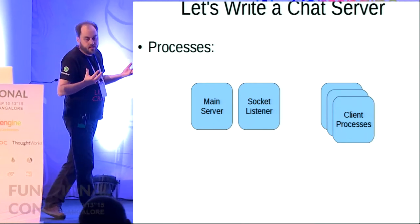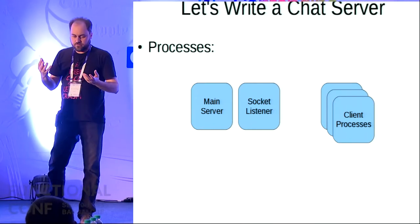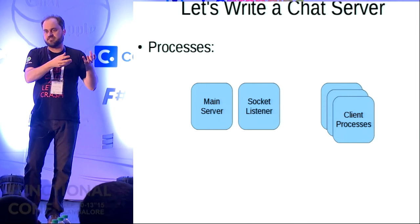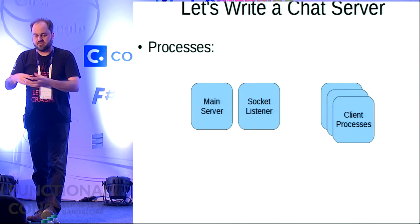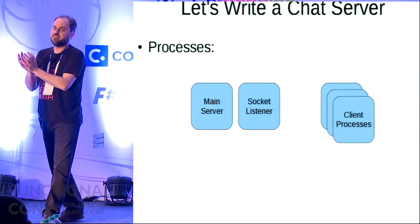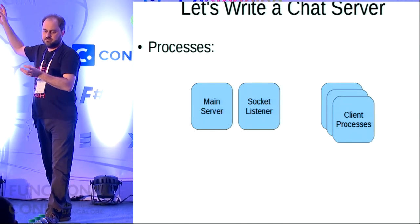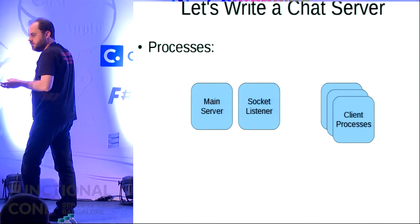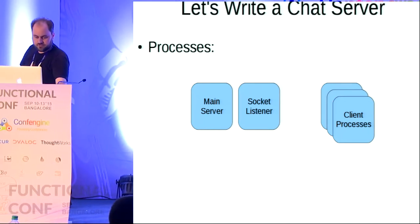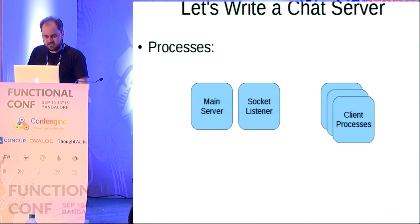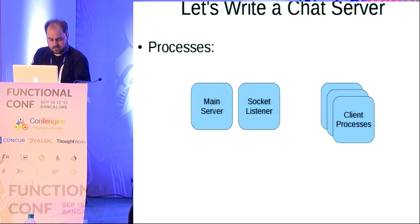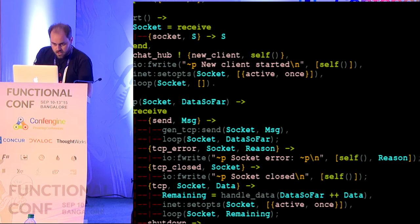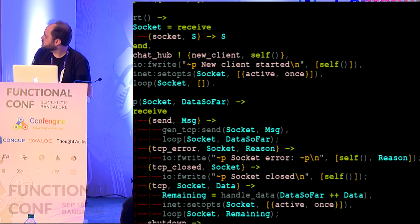What we're going to write first is a chat server with three components: the main server — the process that starts when you start everything up — another process that is the socket listener sitting there listening for incoming connections, and a bunch of transient processes for each of the existing client connections. For those of you who've got the code, it's in the simple directory.